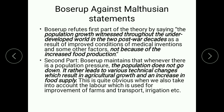Boserup argues against the Malthusian statements. Boserup refutes the first part of the theory by saying that population growth witnessed throughout the underdeveloped world in the post-war decades was not because of increased food production but because of improved medical inventions and some other factors.